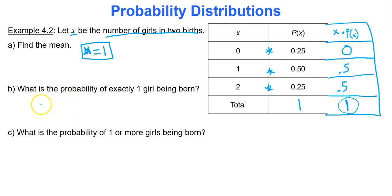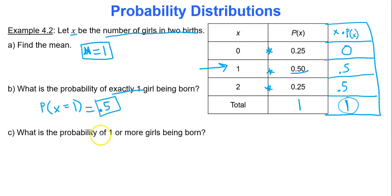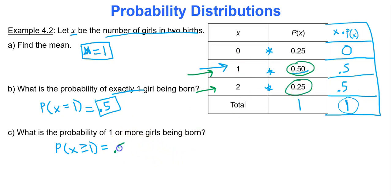A mean of 1 means that if you surveyed infinitely many families having two children, the average number of girls born would be 1 — which makes sense given the 50-50 chance. The probability of exactly one girl being born is found by looking at the row where x equals 1, giving a probability of 0.5. The probability of one or more girls is 0.5 plus 0.25, which equals 0.75.